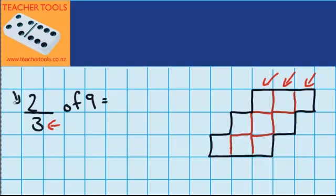So it's easy to see that in 1 third there are 3 squares. But my question says I need to find out how many are in 2 thirds. So if there's 3 in 1, there must be 6 in 2.